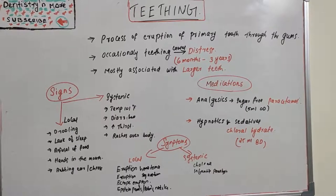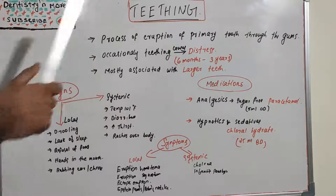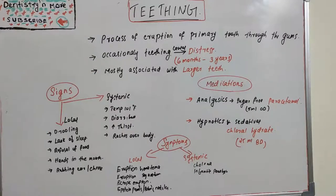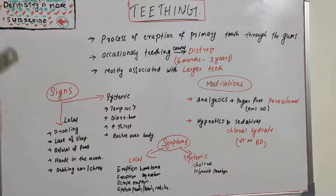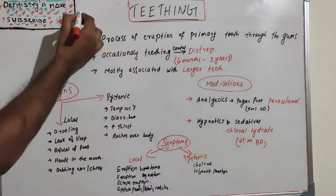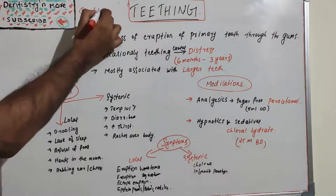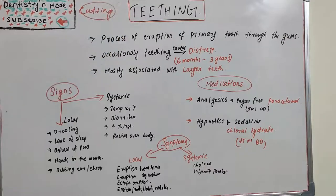Welcome back to another session on dentistry and more. Today we have a small topic in pedodontics: teething. Teething is the process by which an infant's teeth erupt or break through the gums — a normal physiological process. Teething is also referred to as cutting of the teeth, and is medically termed odontiasis.